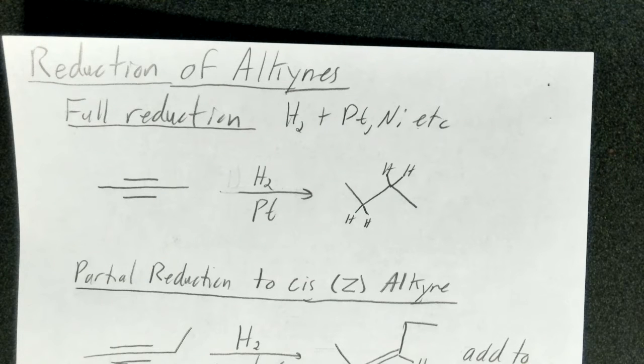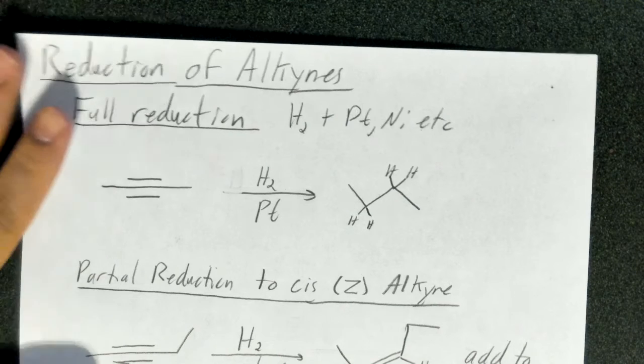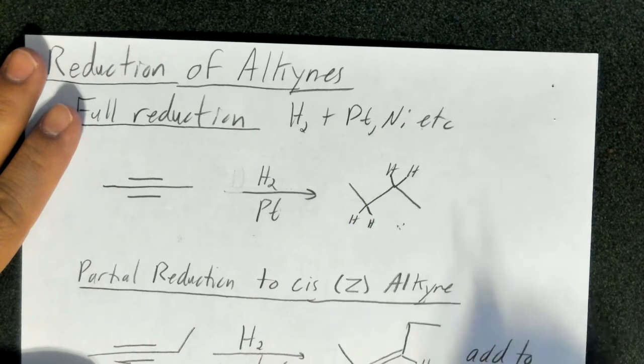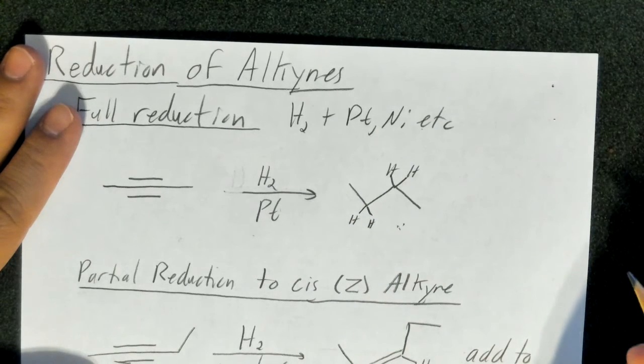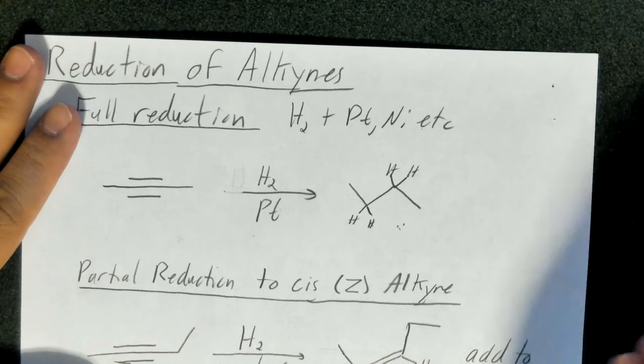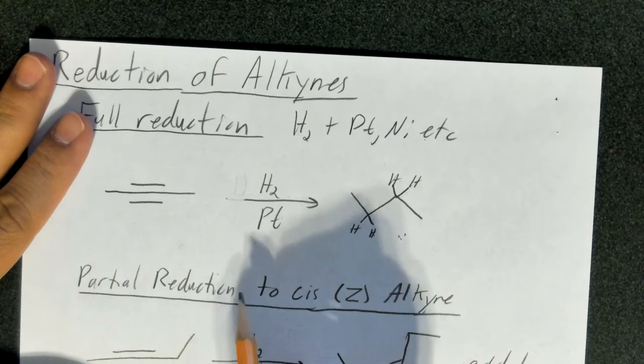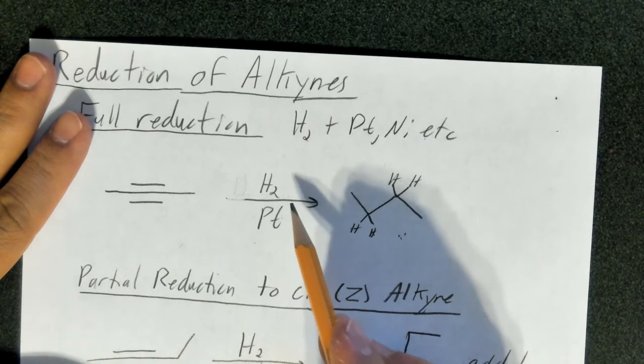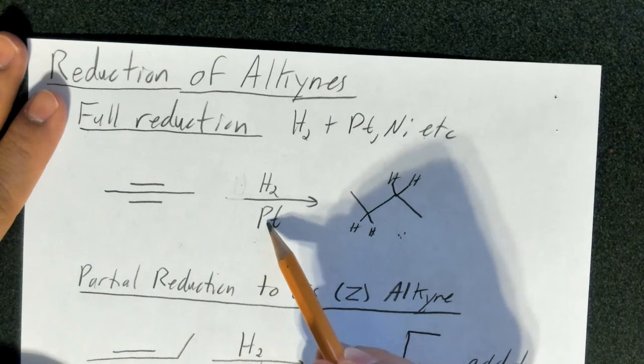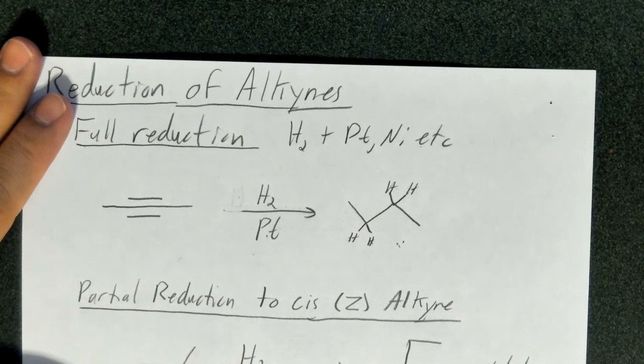What you essentially do is you completely reduce it. You don't stop at the alkene. It does technically form first, the alkene that you would imagine. But it quickly itself, because that is what alkenes do in the presence of hydrogen gas and a metal catalyst, it further undergoes reduction and forms this fully reduced triple bond completely gone. And you replaced it with four hydrogens. Now, what if you want to stop at the alkene? So is there a way to do that with hydrogen gas and a catalytic metal? There is, but what you have to do is you have to poison the metal catalyst.